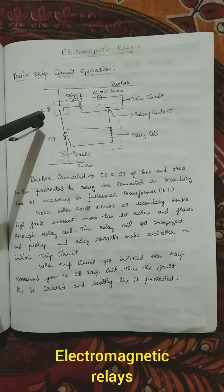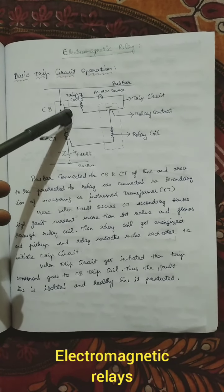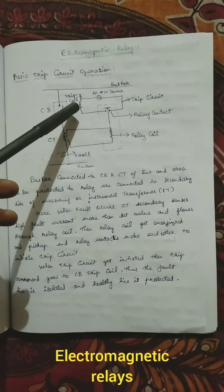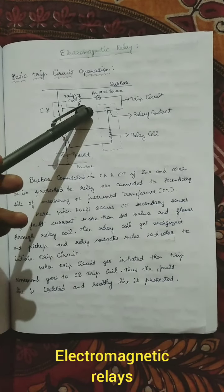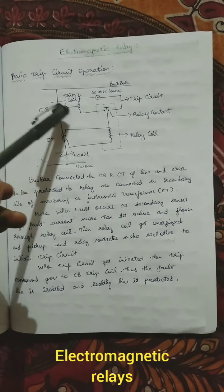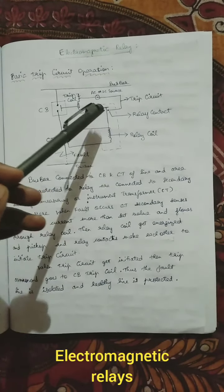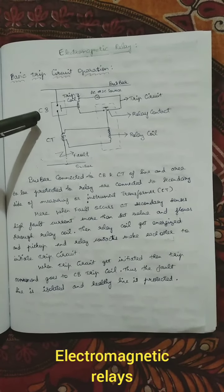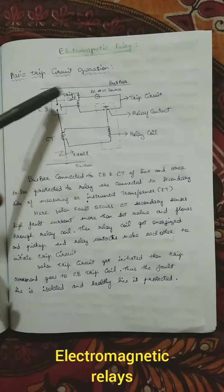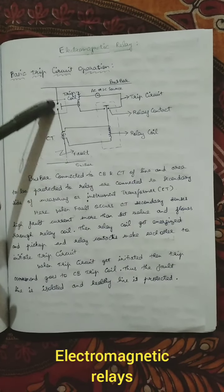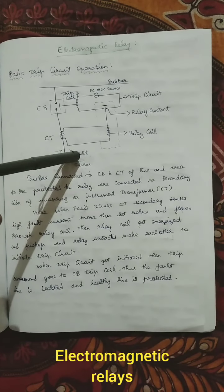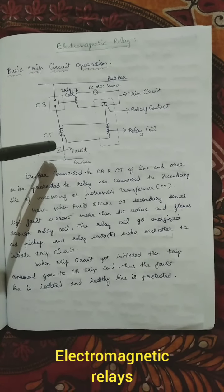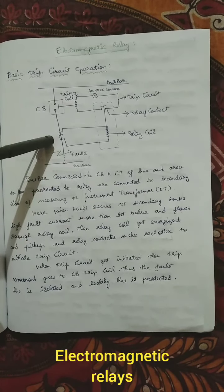The circuit breaker, which I have shown as CB, is connected with the tripping coil — the breaker tripping coil. The tripping coil circuit is connected to the relay coils and the relay contacts. This line is to be protected, and when a fault occurs as overcurrent, earth fault, or overvoltage, the CT will sense a high current.